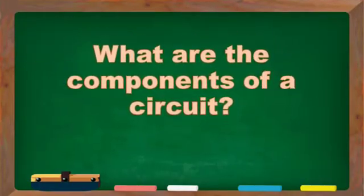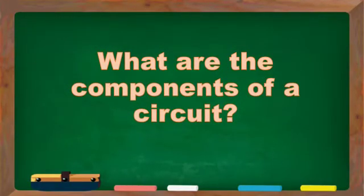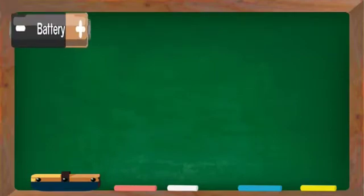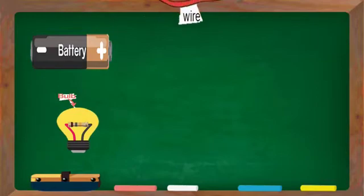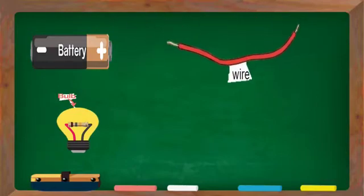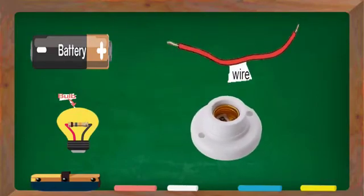What are the components of a circuit? We have battery, light bulb, connecting wire, and bulb holder.